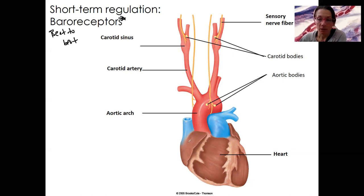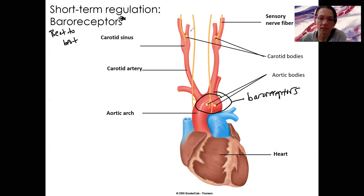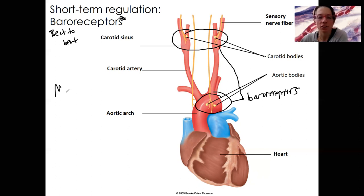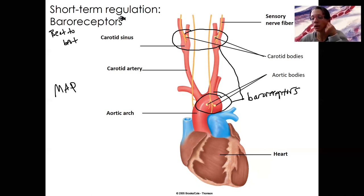These baroreceptors detect blood pressure. They're located in the aortic arch — these are the aortic bodies, so these are baroreceptors. They're also located in the carotid sinus, and these carotid bodies are also baroreceptors. These are locations where, as blood flows through, they can detect the pressure of blood pushing against the vessel wall. These are both really good places to measure mean arterial pressure — not just local blood flow of certain tissues. This is the blood going to the systemic circuit, and this is the blood going to the brain, which is a pretty important thing to maintain. Carotid bodies are located on the vessels that go up to the head.